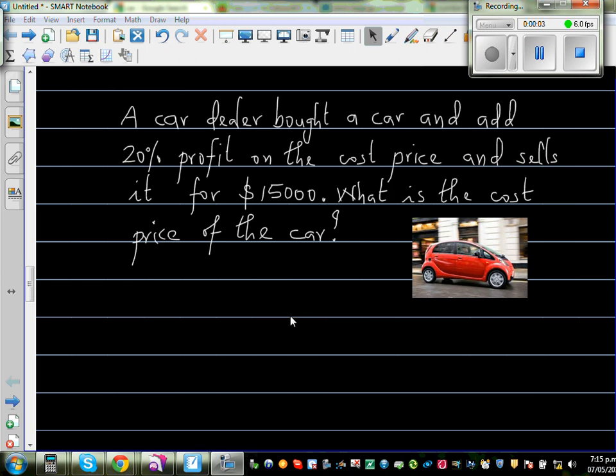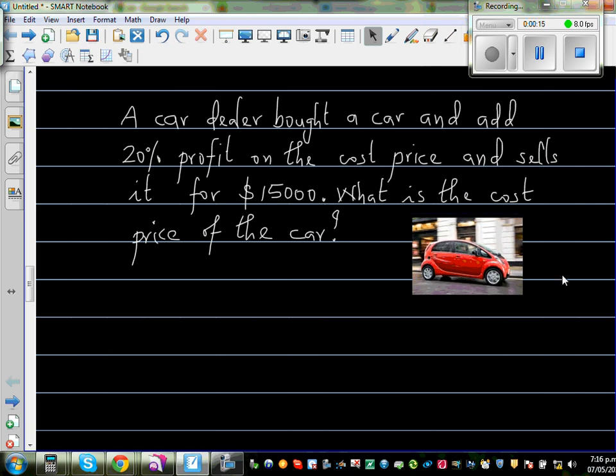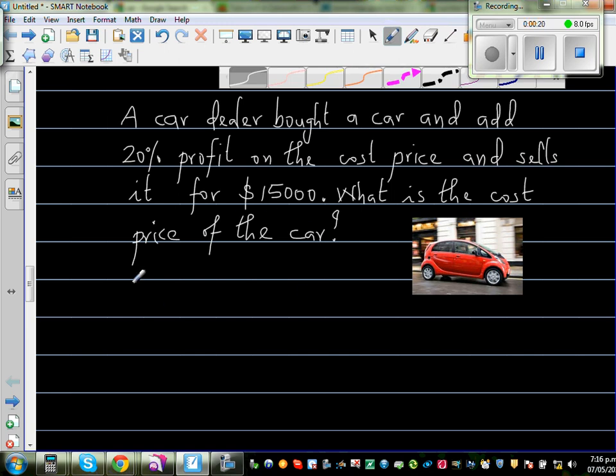A car dealer bought a car and adds 20% profit on the cost price and sells it for $15,000. What's the cost price of the car? Now imagine this is the car that the dealer bought for a particular amount. So we want to find the cost price.